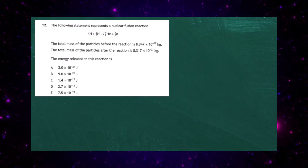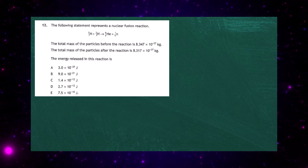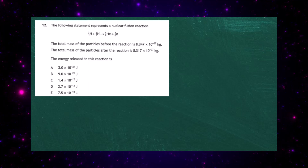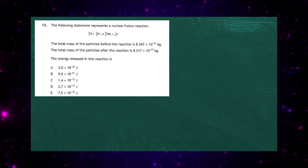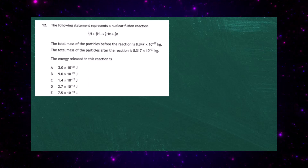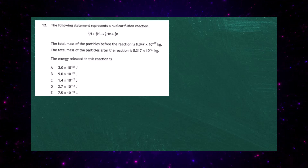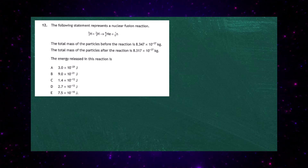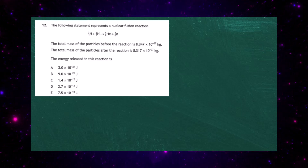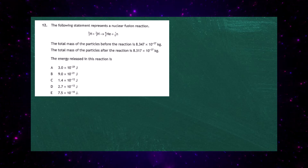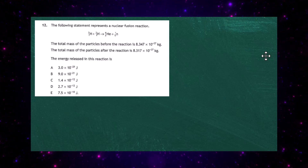Question 12 from the 2023 SQA Higher Physics examination Paper 1. The following statement represents a nuclear fusion reaction: 3H1 plus 2H1 gives helium 4H2 plus a neutron. If we take all the masses on the left-hand side, that comes to 8.347 × 10⁻²⁷ kg, and comparing with the masses after the reaction on the right-hand side, we can see there's been a reduction in mass — that's what we call a mass defect.